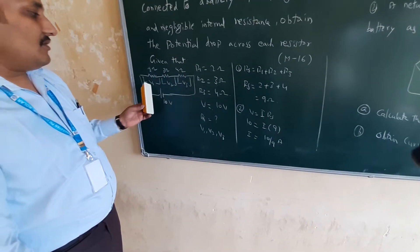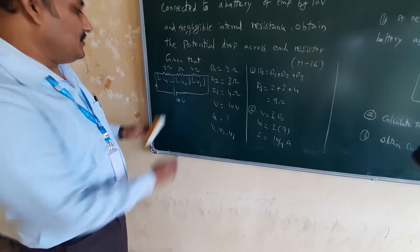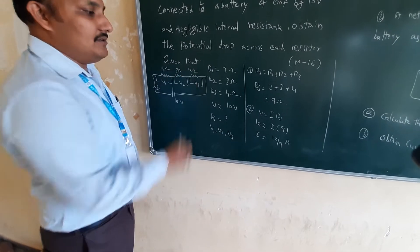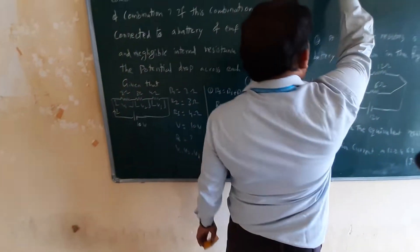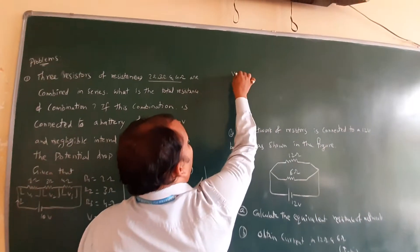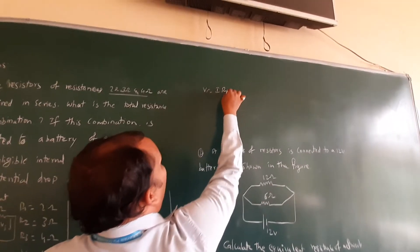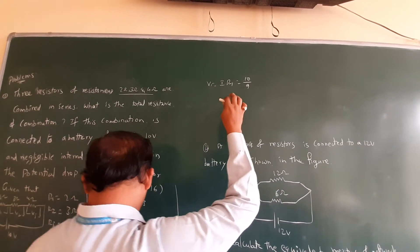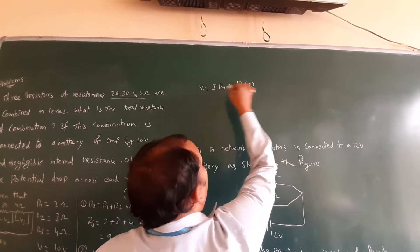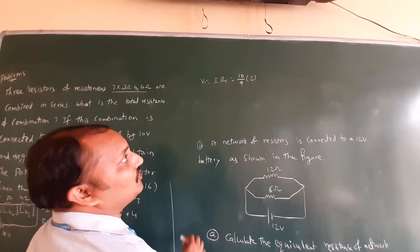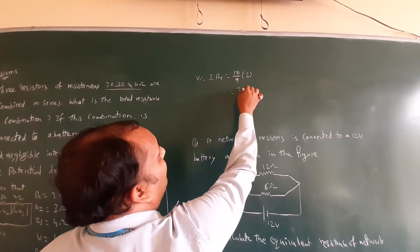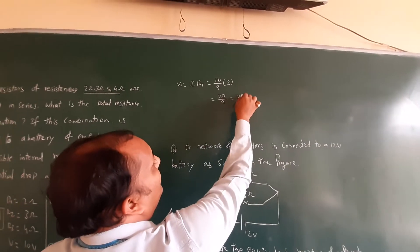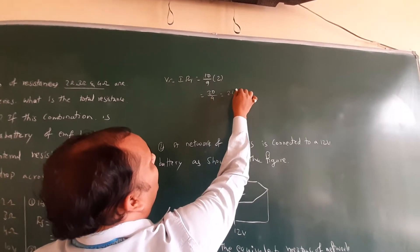The current through 2 ohm, 3 ohm, and 4 ohm is 10/9 A. Now V1 = I × R1 = (10/9) × 2 = 20/9. This is the potential difference across the 2 ohm resistor. 20/9 is approximately 2.2 volts.